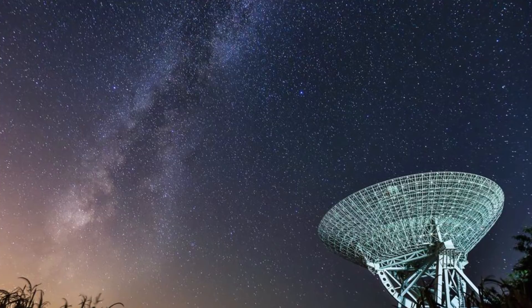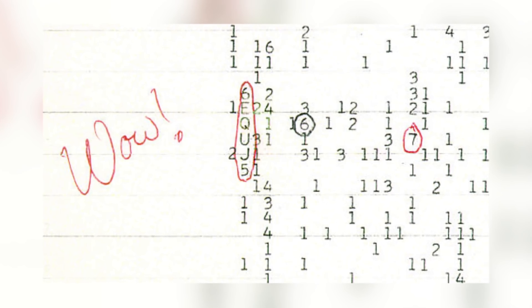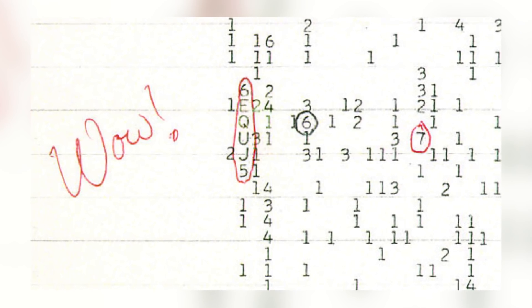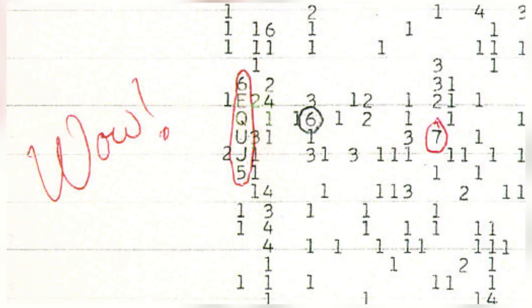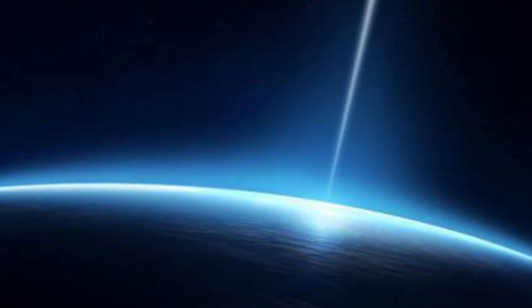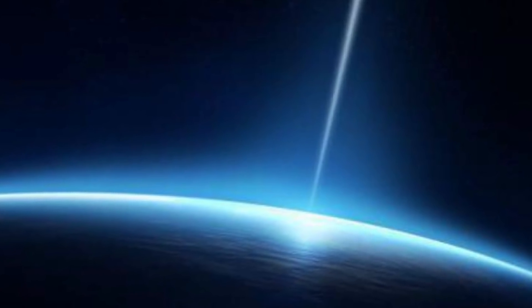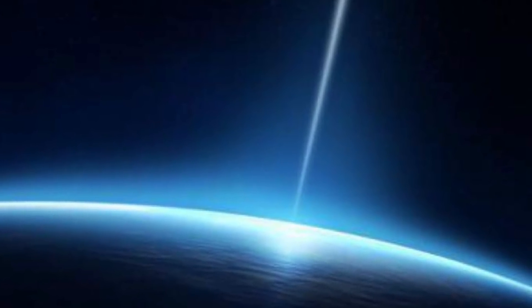which he thought could signify something very important. He circled his findings and wrote WOW next to them, which would eventually bring about the name many associate with the signal. These findings have been held up for the last 40 years as proof that aliens are out there, with many assuming that these waves must be transmissions from them, similar to our own communication systems.